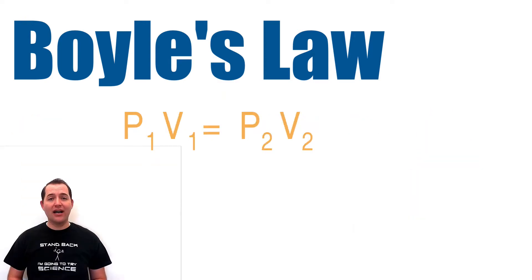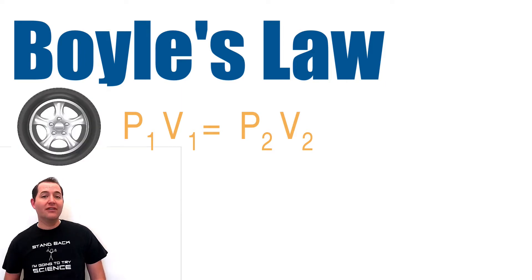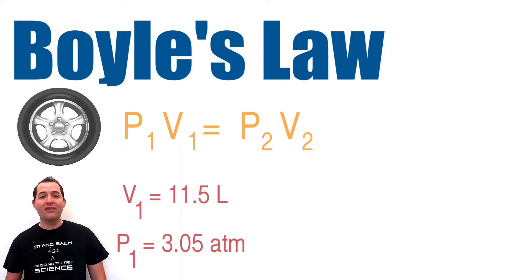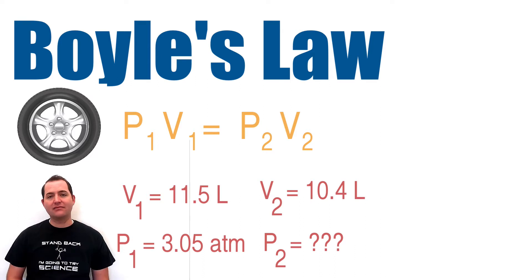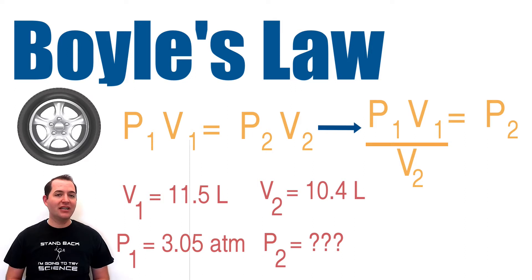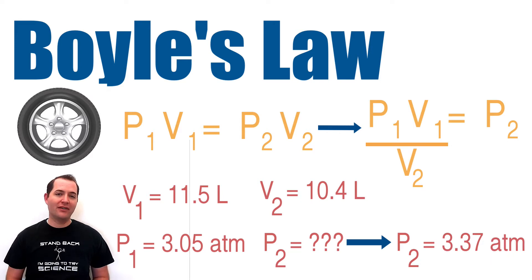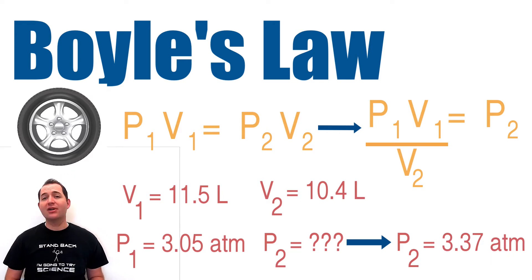The equation for Boyle's law allows us to compare the pressure and volume from two situations. If a tire has a starting volume of 11.5 liters and a starting pressure of 3.05 ATMs, what will the new pressure be if the tire is compressed to a volume of 10.4 liters? If we solve the Boyle's law equation algebraically and substitute in each of our values, we can see that the new pressure will be 3.37 atmospheres. This pressure has increased because we have reduced the volume of the container.